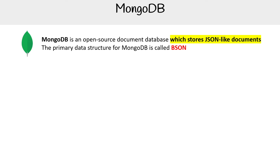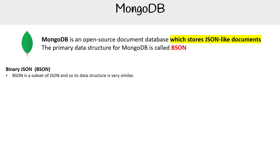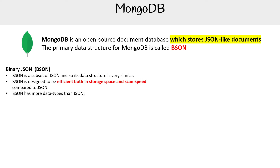Let's take a quick look at MongoDB, which is an open source document database that stores JSON-like documents. The primary data structure for MongoDB is called BSON — a binary JSON, which is a subset of JSON. Its data structure is very similar to JSON, but it's designed to be efficient in both storage space and scan speed compared to JSON.